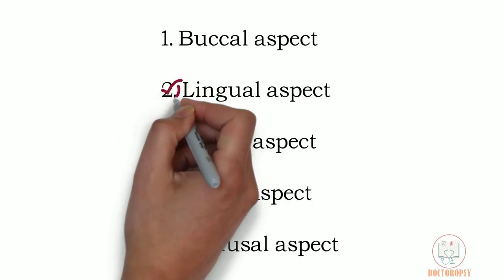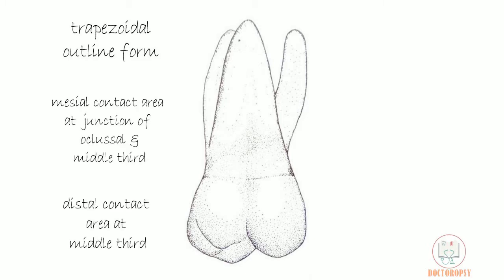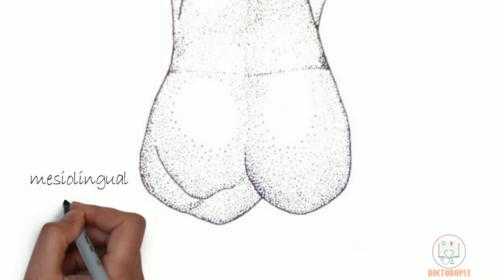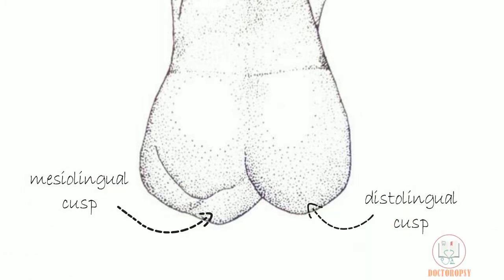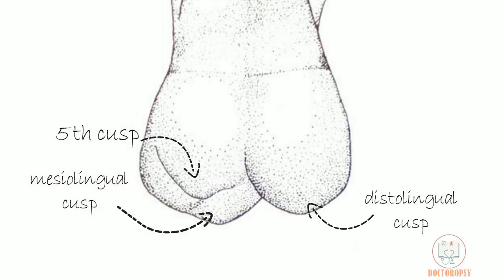Next, the lingual aspect. The outline features of the crown from the buccal aspect are the same in the lingual aspect as well. From the lingual aspect, both the lingual cusps — mesiolingual and distolingual — are seen, along with the fifth cusp. No part of the buccal cusps are visible as they are completely hidden by the lingual cusps.